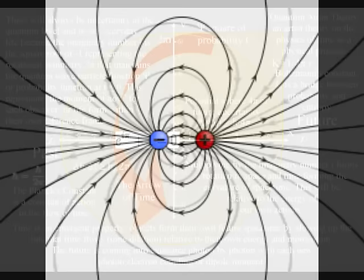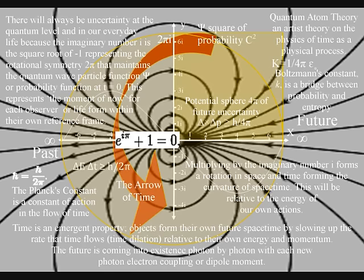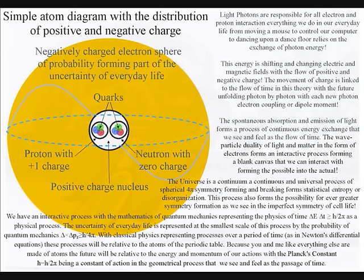Therefore, there is no concept of time in the subatomic world within the nucleus of an atom because time is formed by the spontaneous absorption and emission of photon energy relative to the electron clouds of probability that surround the nucleus. The future uncertainty and probability of everyday life starts with this process of energy exchange.